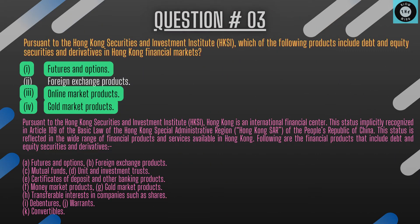The explanation: Hong Kong is an international financial center, as recognized in Article 109 of the Basic Law. The following financial products include debt and equity securities and derivatives: a) futures and options, b) foreign exchange products, c) mutual funds, d) unit and investment trusts, e) certificates of deposit and other banking products, f) money market products, g) gold market products, h) transferable interests in companies such as shares, i) debentures, j) warrants, k) convertibles.